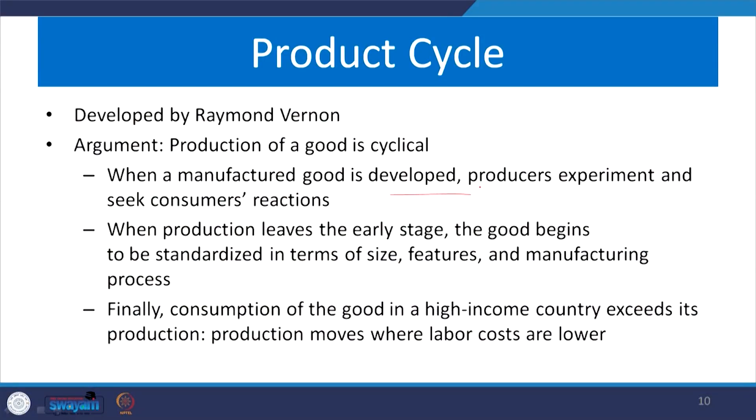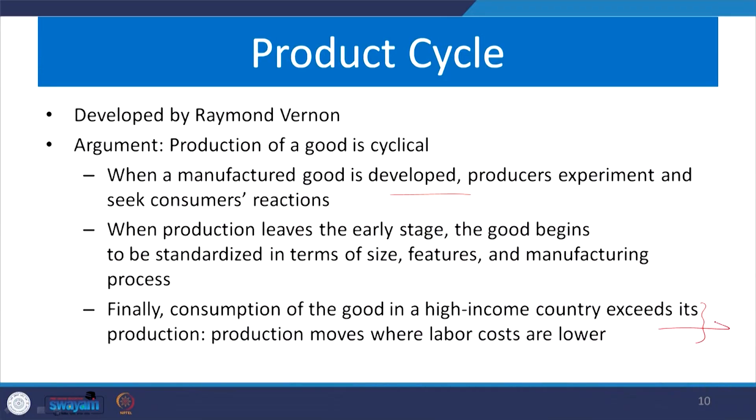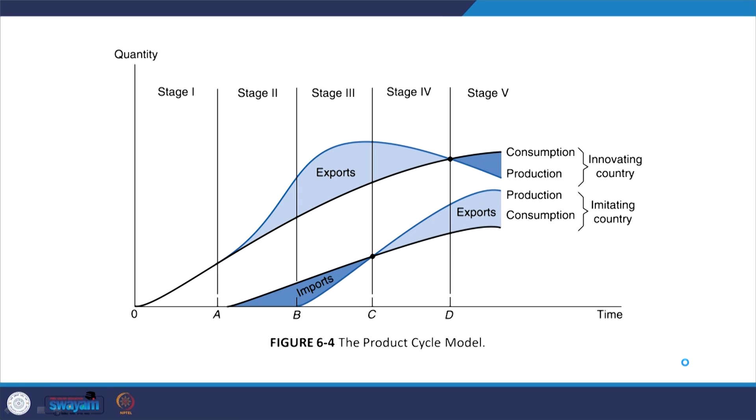Raymond Vernon added that when a manufactured good is developed, producers experiment and observe consumer reaction. When production leaves the early stage, goods begin to be standardized in terms of size, manufacturing process, features, and qualities. Finally, consumption of the good in the high-income country exceeds its production, and production moves to where labor costs are lower — the technology shifts to other countries which do not have the original endowment. This is therefore one of the extensions to the HO model.